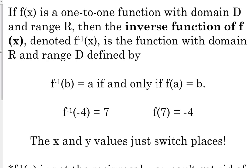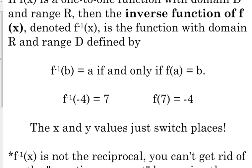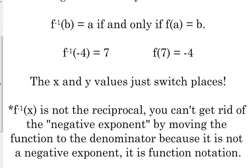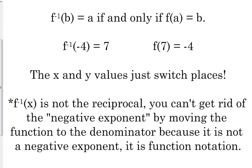If your inverse has the point (-4, 7), then your original will have the point (7, -4) — just switching those places between x and y values. What I have at the bottom is what I said a minute ago: f⁻¹(x) is not a negative x — it is the function notation for inverse.